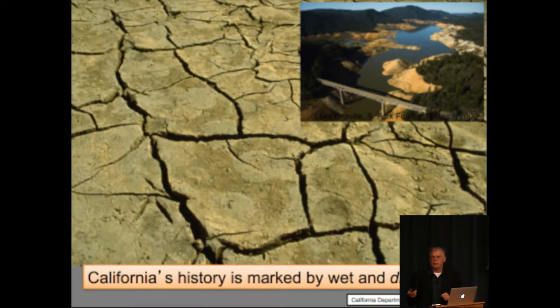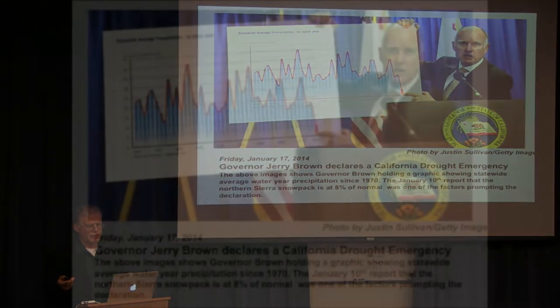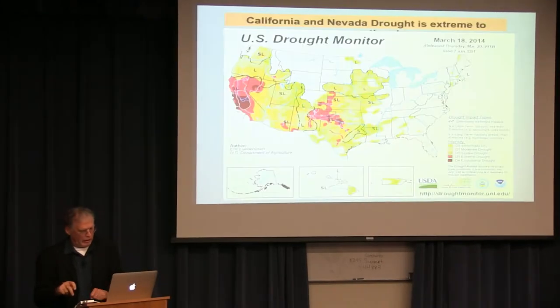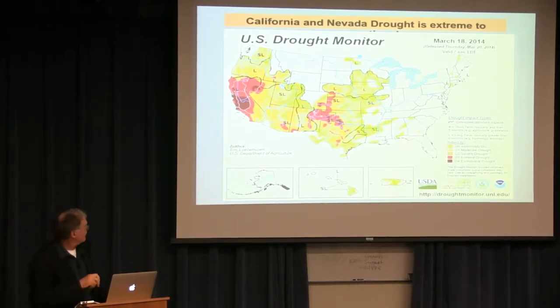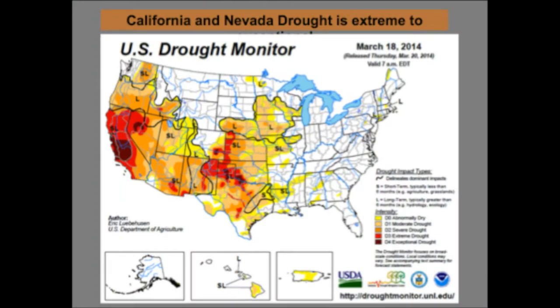Governor Brown has actually made two different drought declarations to alert the state — one in January and one more recently as the season wore on and it became clear that nature wasn't going to reverse things this year — no Miracle March. The current drought layout shows an apex pretty much centered on where we are right now, with extreme drought strong in the central part of the state.